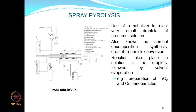Spray pyrolysis uses the fact that extremely fine droplets are also extremely reactive. You use a nebulizer to prepare very small droplets of a solution and inject them into a pyrolysis reactor, which induces reactions to take place within the droplets. High temperature-induced chemical reactions form aerosols or particles within the droplets. The solvent then evaporates, leaving behind the nanoparticles. Examples of materials produced this way include TiO2 and copper.